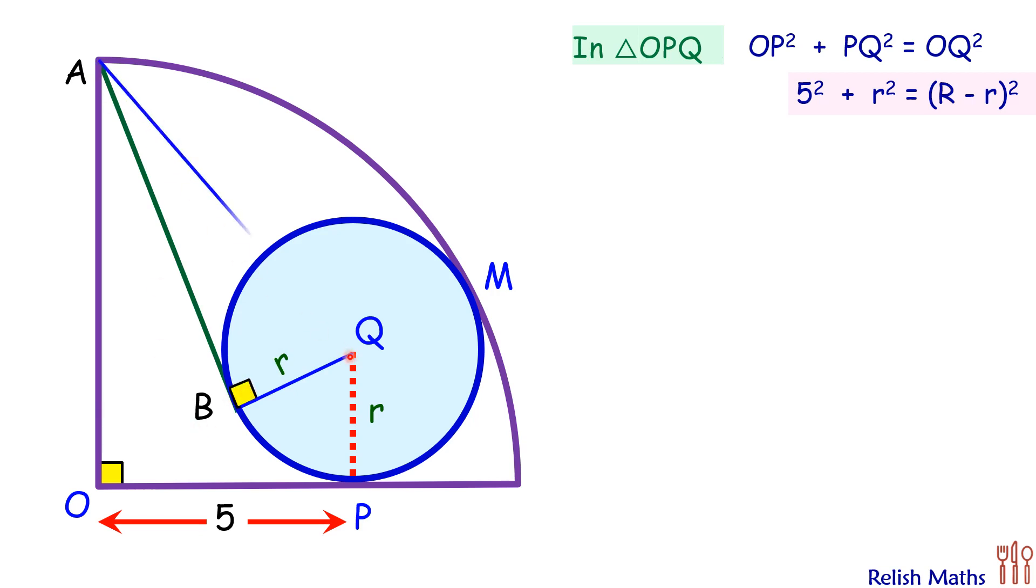Let's join AQ and let's assume AQ is X. So in triangle ABQ, this yellow triangle, we are applying Pythagoras theorem. AB² + BQ² = AQ². Putting the values, AB² + r² = X². Now if you see here, we have three variables and only two equations, so we need a third equation to solve this.